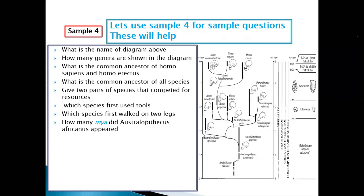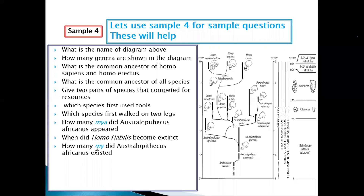How many million years ago did Australopithecus africanus appear? Locate it on the diagram and draw a line to the scale — approximately 2.9 million years ago. When did Homo habilis become extinct? Find where Homo habilis ends on the diagram, draw a line to the scale — approximately 1.5 million years ago, counting from zero at the top. Always use a ruler rather than estimating.